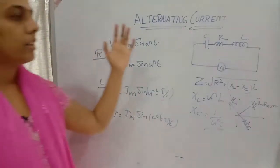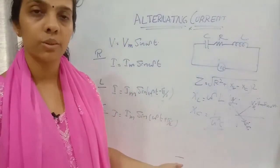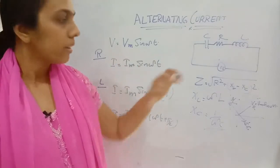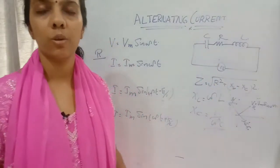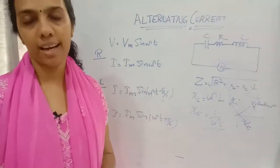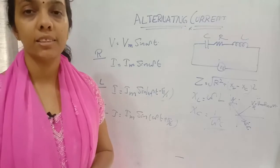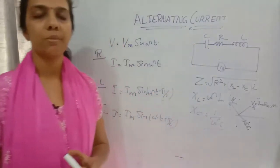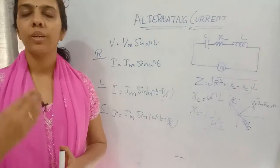So if in a question it is an RL circuit, RC circuit, or LC circuit, we can substitute the respective values and find out the total resistance, inductive reactance, or capacitive reactance from this method.